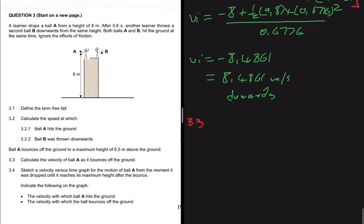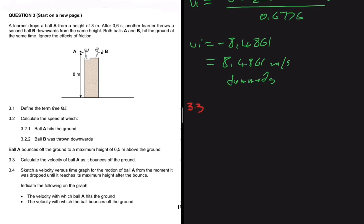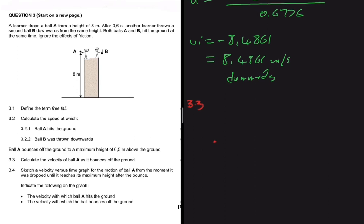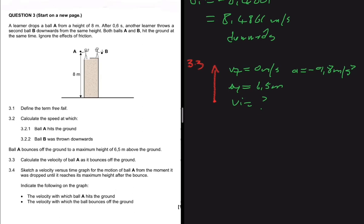For 3.3, ball A bounces off the ground to a maximum height of 6.5 meters. We need to calculate the velocity of ball A as it bounces off the ground. Considering the motion from the bounce until it reaches maximum height, we know that at maximum height vf equals zero, acceleration is minus 9.8 meters per second squared, and Δy equals 6.5 meters. We are looking for vi.